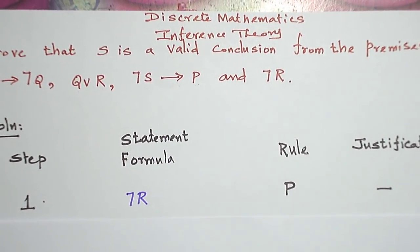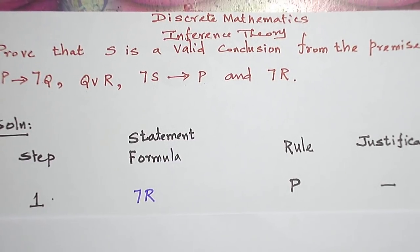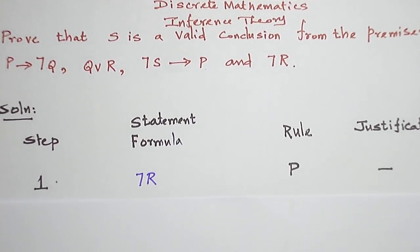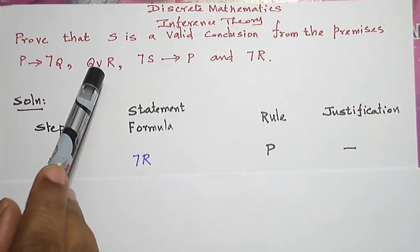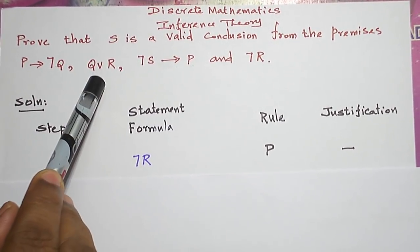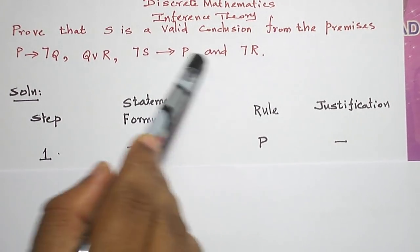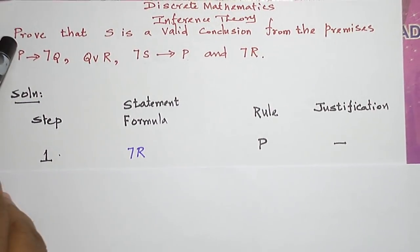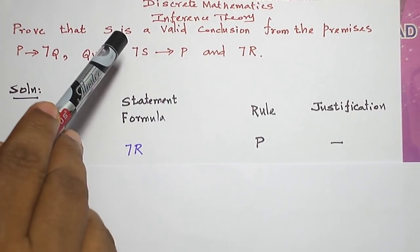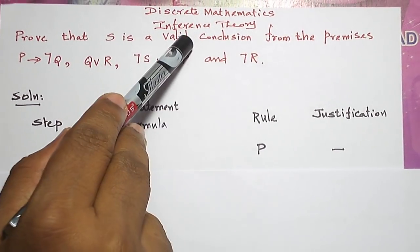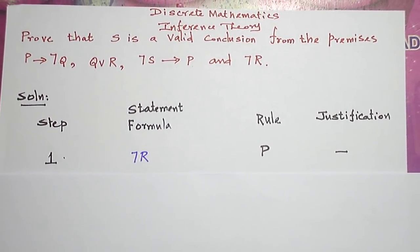Students, today let us see a problem from the topic inference theory, which comes under the subject discrete mathematics. We are given four premises: P conditional negation Q, Q or R, negation S conditional P, and negation R. Using these premises, we have to conclude that S is a valid conclusion from the premises.